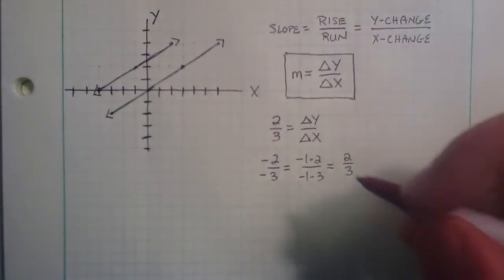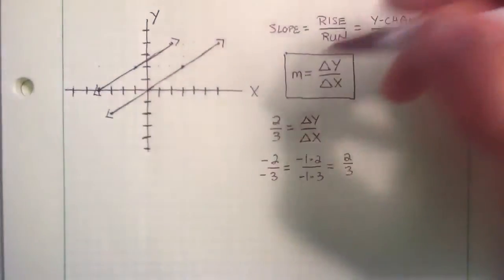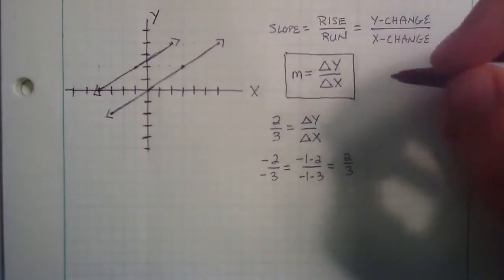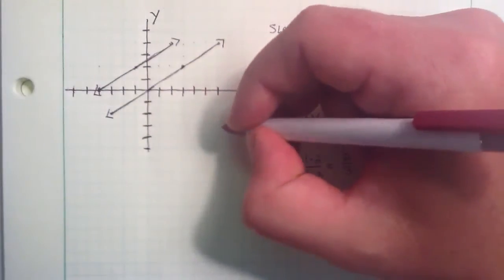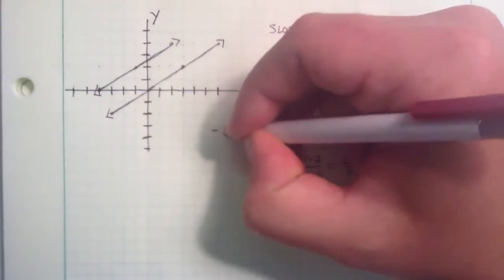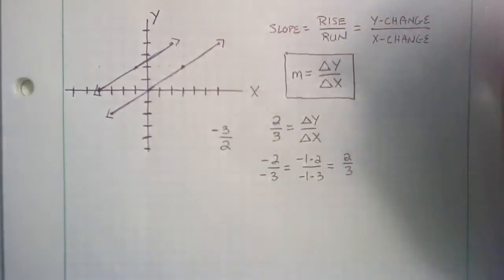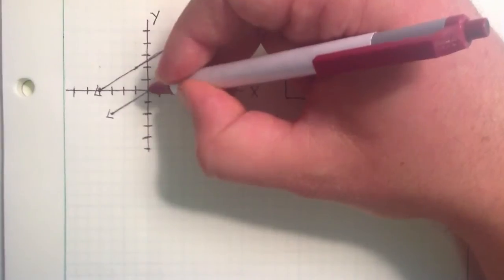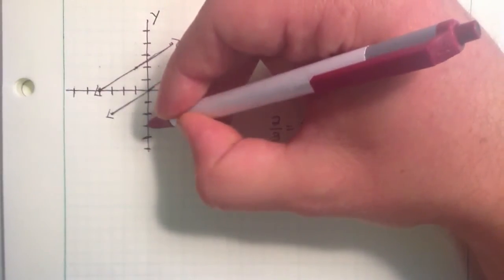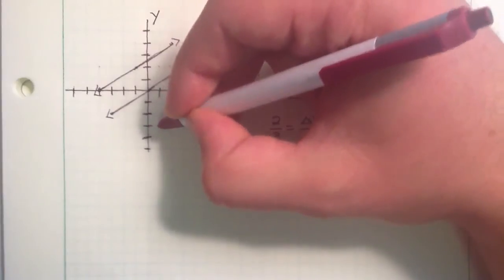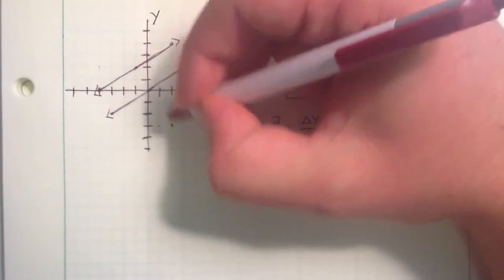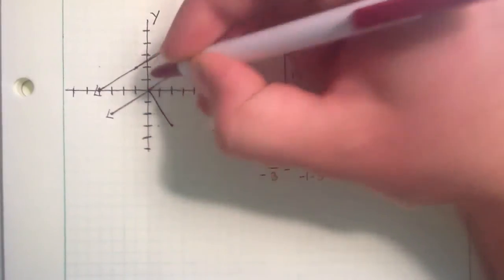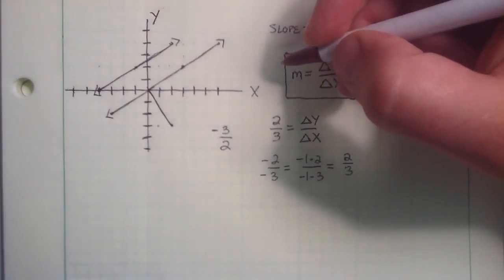Now let's try a line with a negative slope. We want to plot a line with a slope of negative 3 over 2. So we could start at the origin and count down in the y direction negative 3, and then in the positive x direction 2. So this line segment starts to represent the line with a slope of negative 3 over 2.